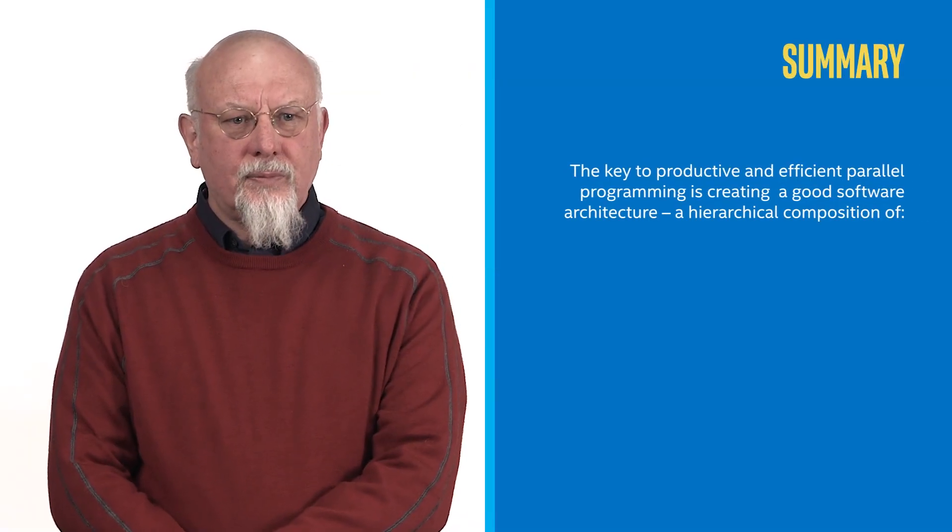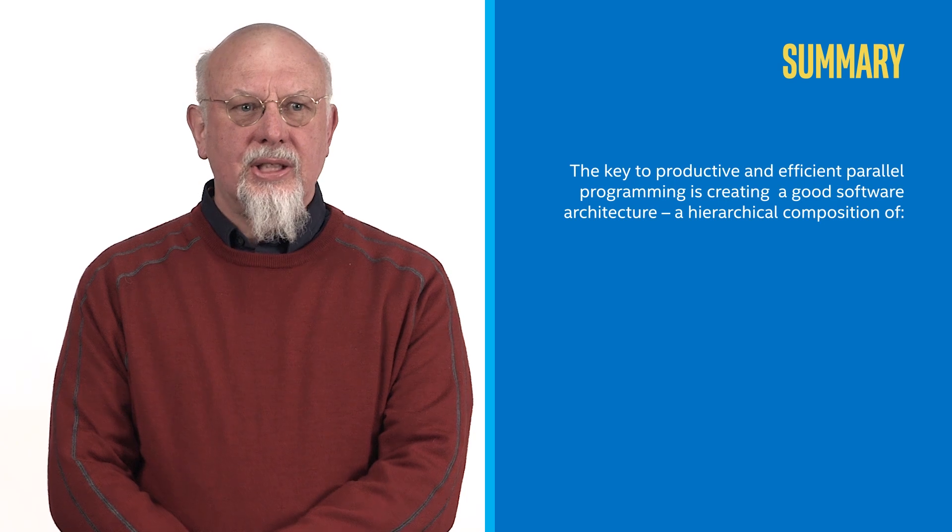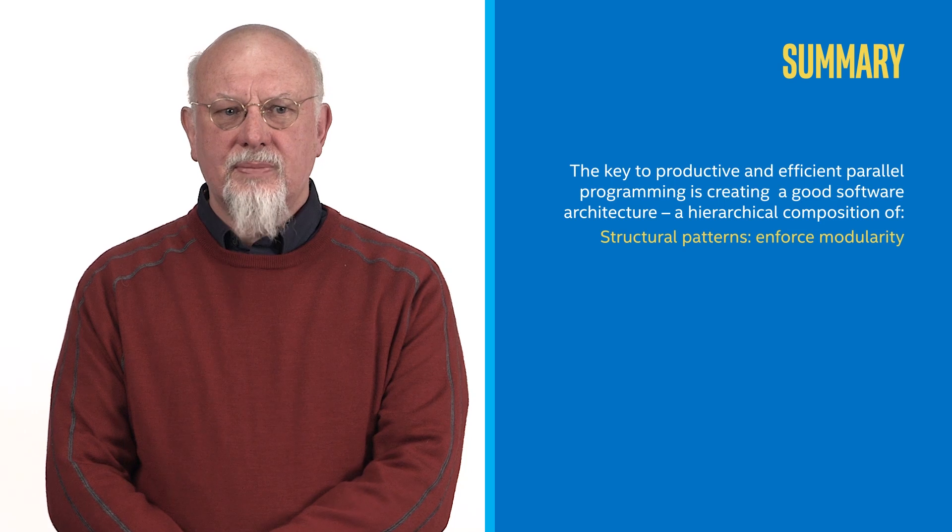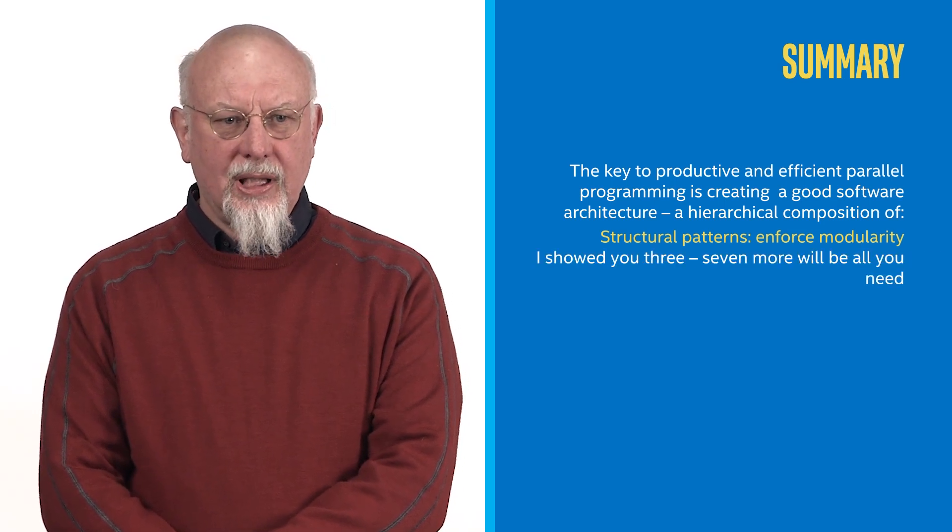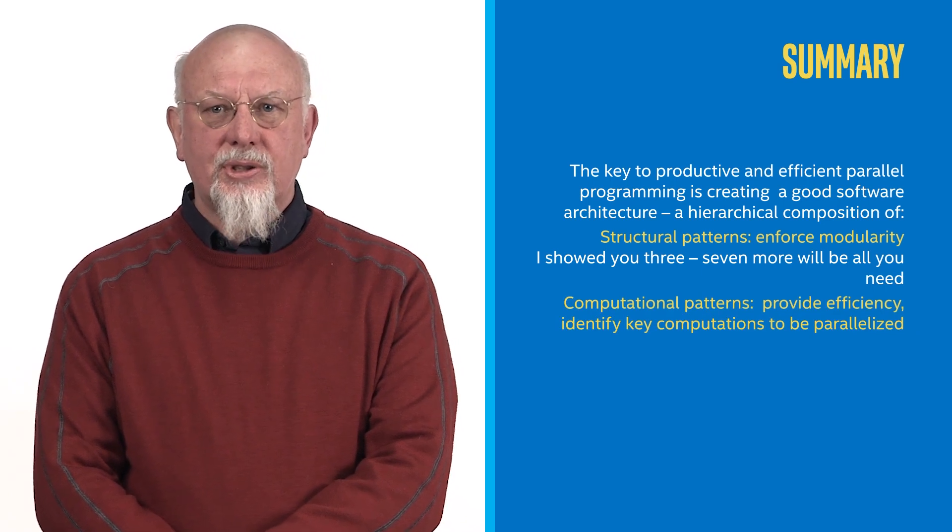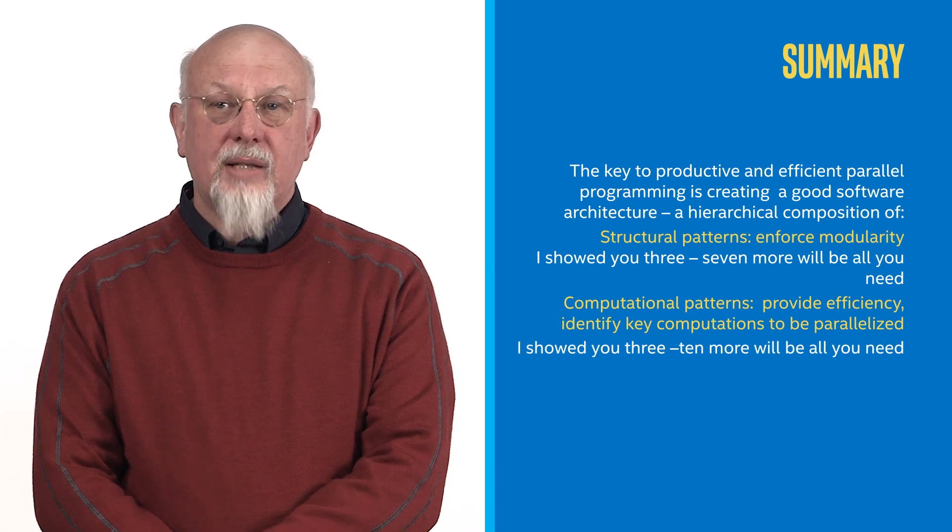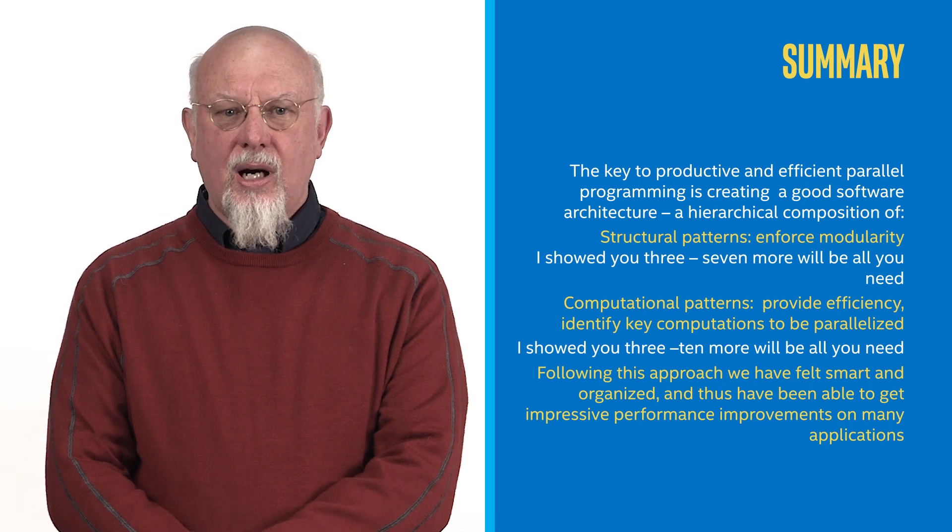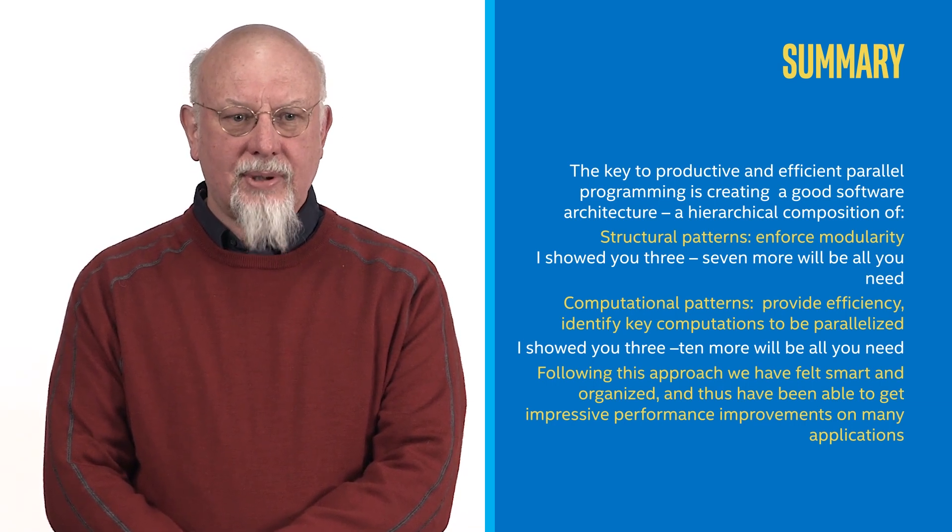So in summary, we believe the key to productive and efficient parallel programming is creating a good software architecture, which is a hierarchical composition of structural patterns, which enforce modularity. And I showed you just three of these, but seven more will be all you need. Computational patterns, which provide efficiency and help us to identify key computations to be parallelized—again, I showed you three, and 10 more of those will be all you need. And following this approach, we have felt smart and organized, and thus have been able to get impressive performance results on many applications. I showed you just one, there are many more.